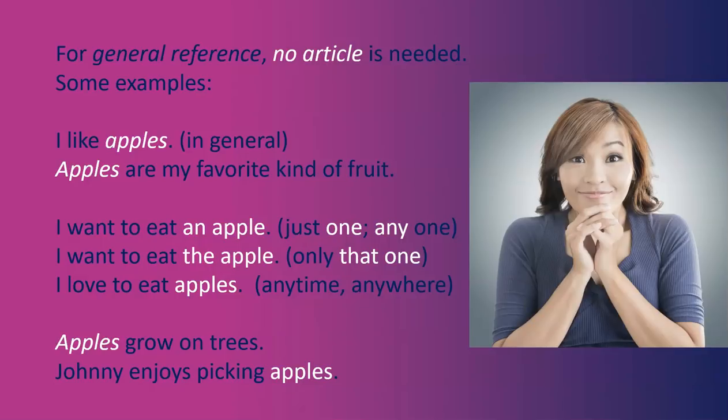For example, 'I like apples in general' or 'Apples are my favorite kind of fruit.' How does that contrast with 'an apple' or 'the apple'? 'I want to eat an apple' — just one, any one. 'I want to eat the apple' — I only want that one. 'I love to eat apples' — a general statement, any time or any place. 'Apples grow on trees' — we're talking about all the apples in the world, apples in general. 'Johnny enjoys picking apples' — also apples in general, not specific apples right in front of us here and now.